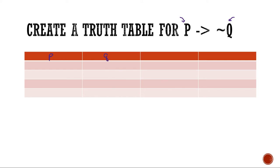For the P column, I'm going to list different possibilities. We know that for a truth table it can be true or false, so I'm going to list my true and false statements in this order: the first two I'm going to make true, and the second two I'm going to make false. Every time you start a truth table, you want to set up a P column that looks like this — two trues and two falses. This always stays the same.